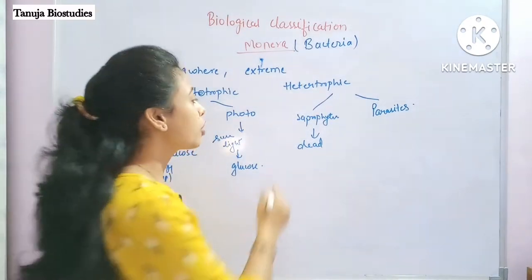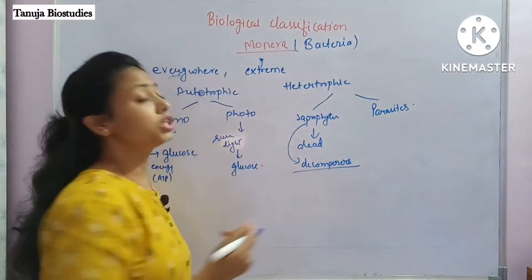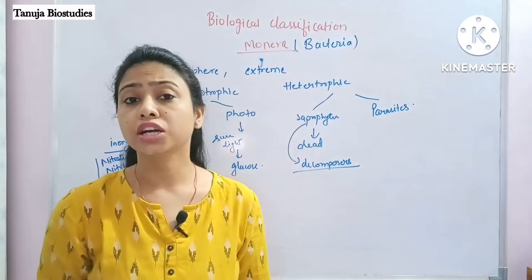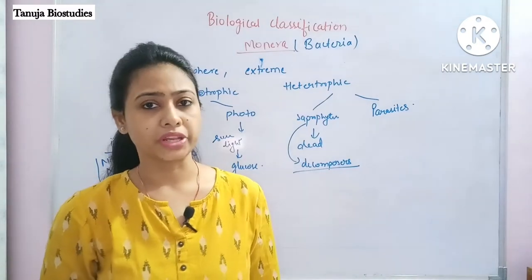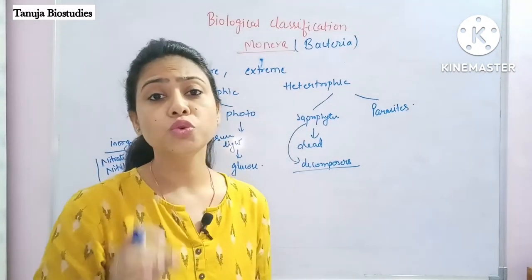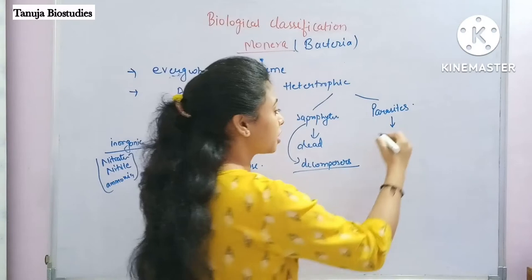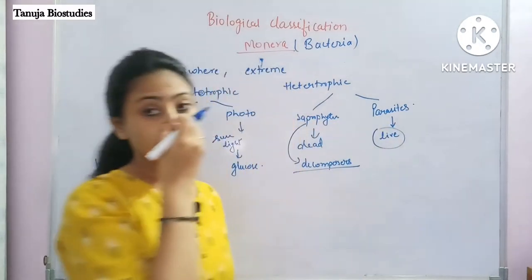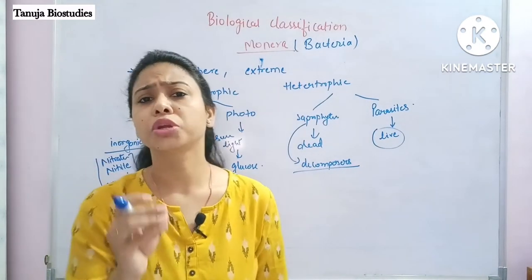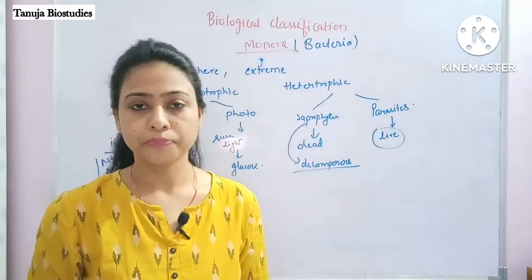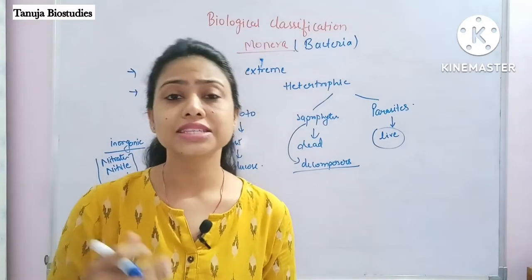Under heterotrophs there are two categories: saprophytes and parasites. Saprophytes survive on dead and decaying matter and are also called decomposers. Decomposers are very important — if no one degrades dead material, it would accumulate enormously on Earth. Parasites depend on a living organism for nutrition and also cause some kind of damage or disease to that host.